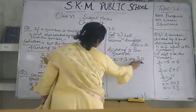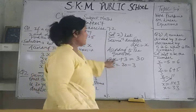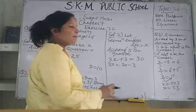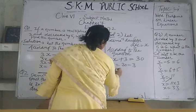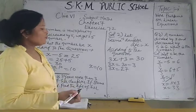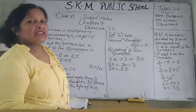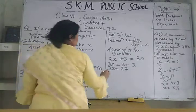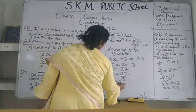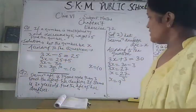Now 3 will be transposed to the right-hand side, this will become 30 minus 3. If plus 3 is here and I transpose it to the right-hand side, this plus 3 becomes minus 3. So 3x is equal to 27. Now 3 is multiplied with x, so x is equal to 27 divided by 3, which is 9. Seema's daughter's age is 9 years.